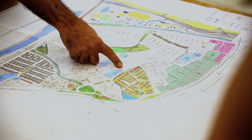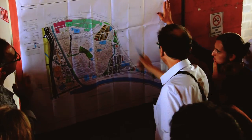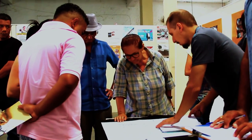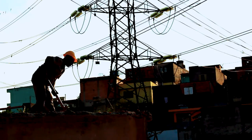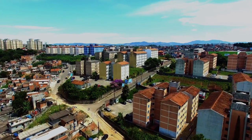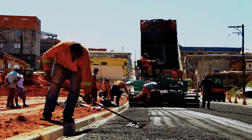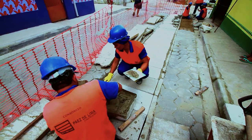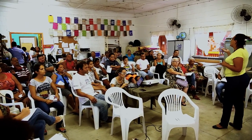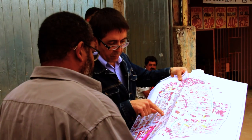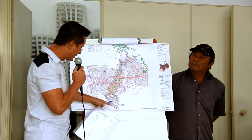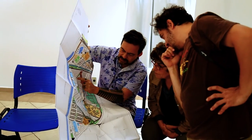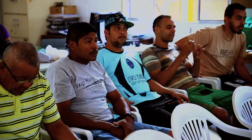É essa parceria que vai garantir o espaço do diálogo, criando condições para discutir assuntos muito difíceis para a população, como por exemplo a remoção de casas e o reassentamento das famílias para abertura de ruas, recuperação ambiental e obras em geral. A equipe social constrói, através do debate, este consenso, pactuando critérios de atendimento e de regularização fundiária, intermediando a relação com as áreas técnicas.